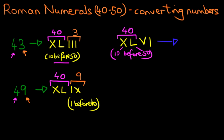Now how about the units? That is the VI we have here. The V is 5 and the I is 1. So that is 6. Therefore, XLVI is 46. Basically you're adding those two together. It's 40 and 6, which makes 46.